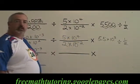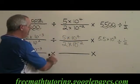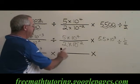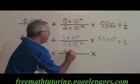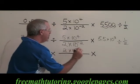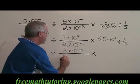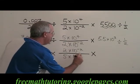The second fraction has to turn upside down so that I can multiply instead of dividing. So the top becomes 2 times 10 to the negative 2 and the bottom becomes 5 times 10 to the 4.